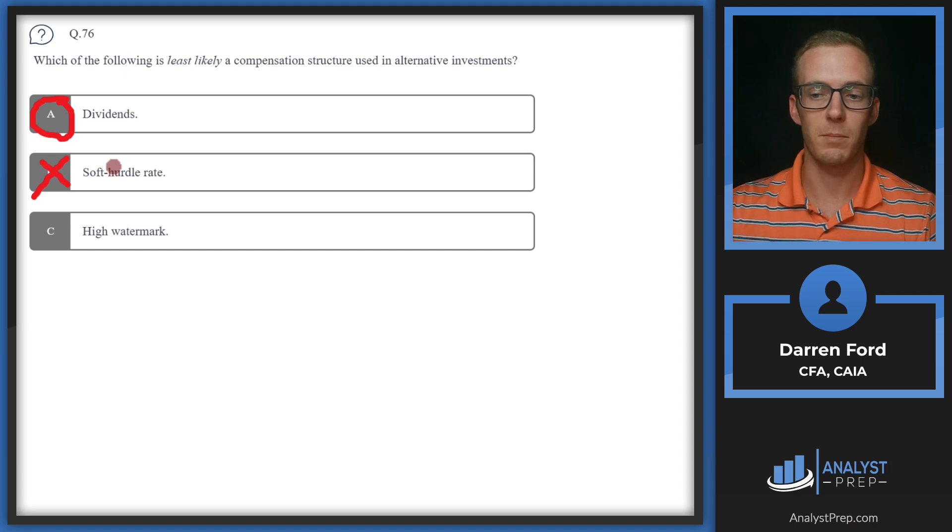B: Soft hurdle rate. Hurdle rates are certainly used a lot in alternative investments, referring to some rate of return that the manager needs to clear in order to get their incentive compensation.